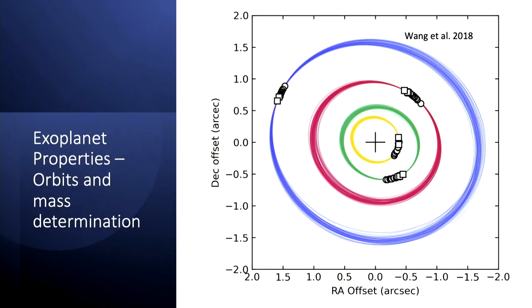Now I'm going to talk about one other very important property we get with directly imaged exoplanets, although sometimes you have to wait a while. If you can follow planets for a long enough time, you start to be able to fit their orbits and get their dynamical masses, especially if you combine with additional techniques like radial velocity or astrometry with Gaia and Hipparcos. This is really valuable because you need these masses to fully test and benchmark all the models I was showing you.